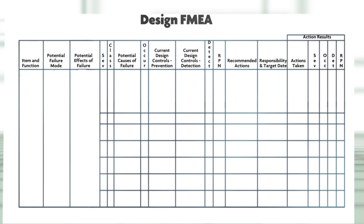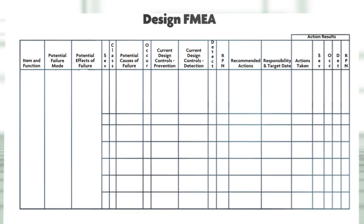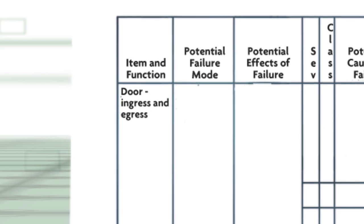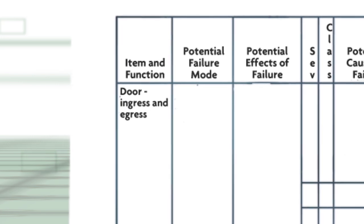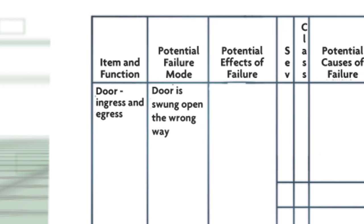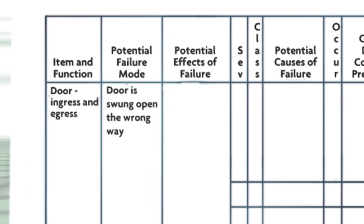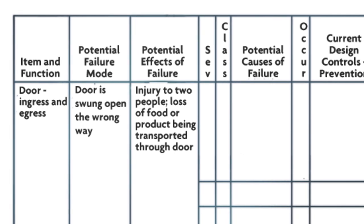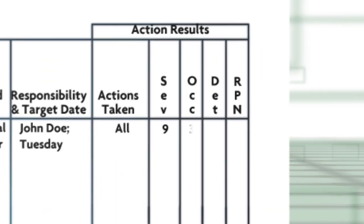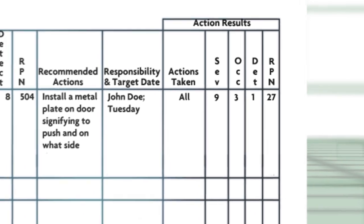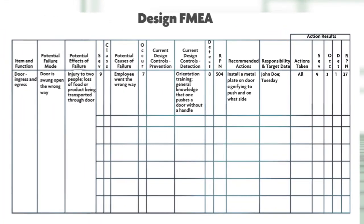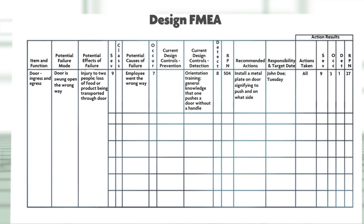Let's look at one of our previous examples with regard to the doors. The item or function is the door. What is the function? Ingress and egress. The failure mode? The door is swung open the wrong way. What are the effects of that failure? There's an injury to perhaps two people, and then we re-evaluate the values. In this case, the severity is a 9, the likelihood of occurrence is a 3, and the detectability is a 1, resulting in the new risk priority number of 27.